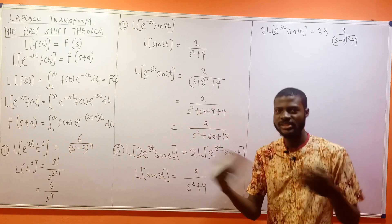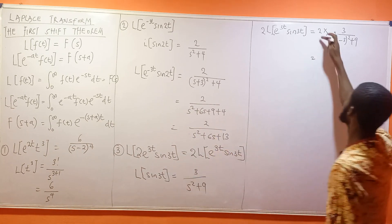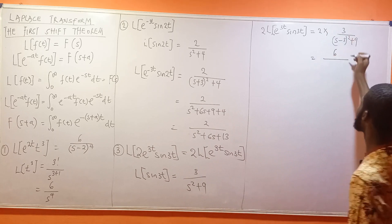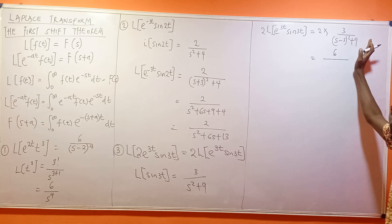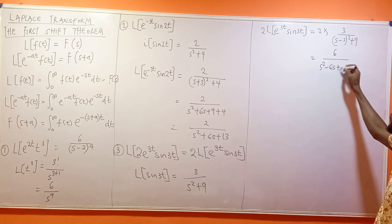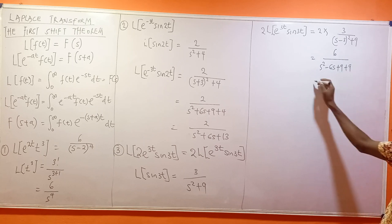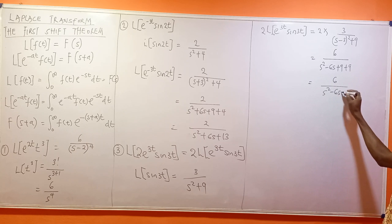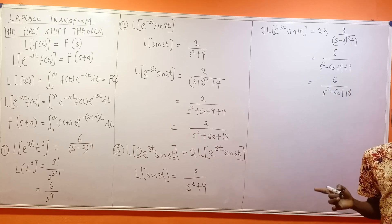So the result becomes 2 times 3 over (s minus 3)² plus 9. That's 6 over s² minus 6s plus 9, then adding the other 9: 6 over s² minus 6s plus 18. That is the result for Example 3.